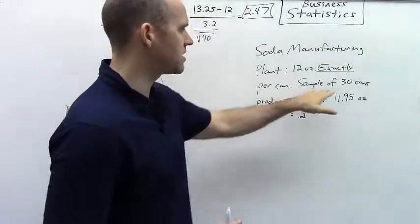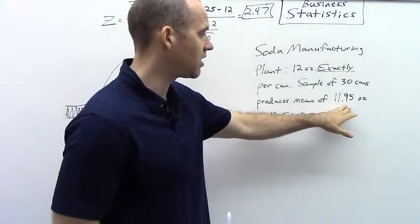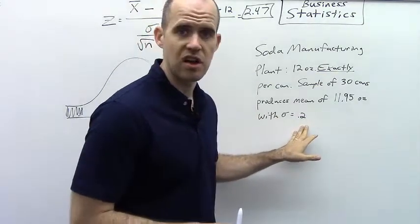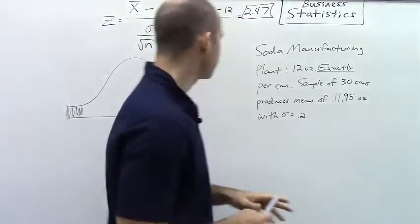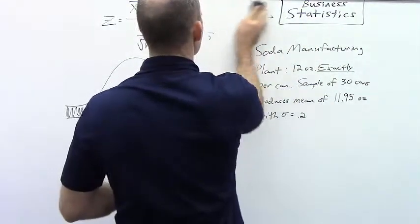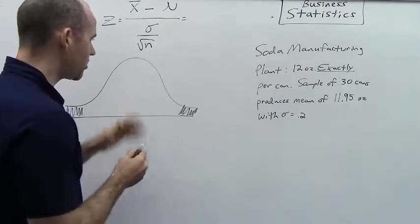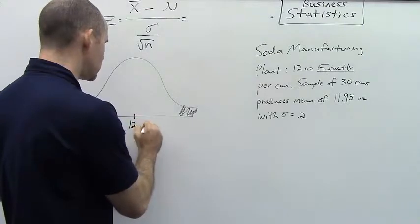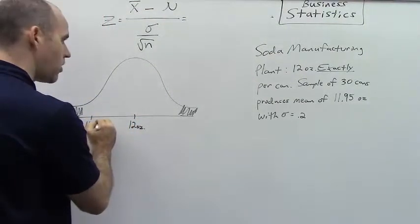So let's imagine that they take a sample of 30 cans and this produces a mean of 11.95 ounces with a population standard deviation of 0.2 ounces. What does this actually mean for us? Well again, let's think about this in terms of our normal curve. So here we have the normal curve and we have our mean that we want to be at at 12 ounces and we're actually down here at 11.95.